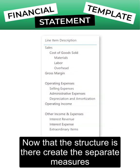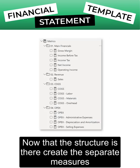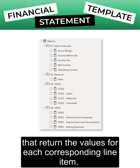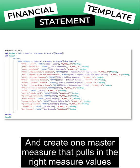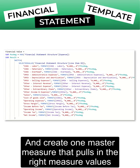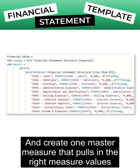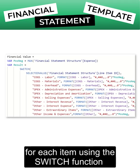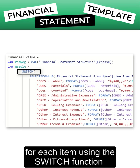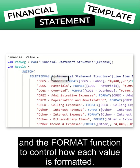Now that the structure is there, create the separate measures that return the values for each corresponding line item, and create one master measure that pulls in the right measure values for each item using the SWITCH function and the FORMAT function to control how each value is formatted.